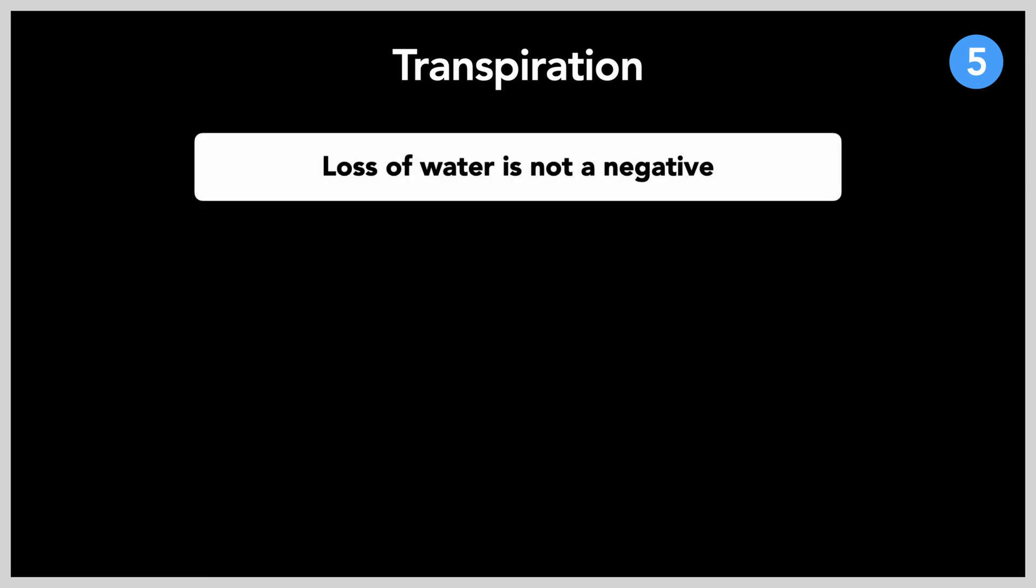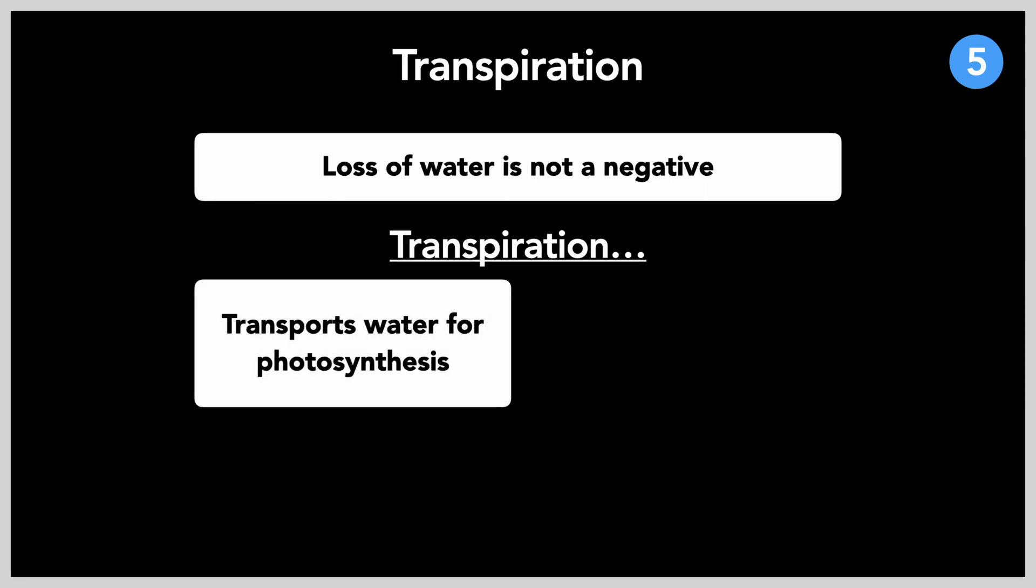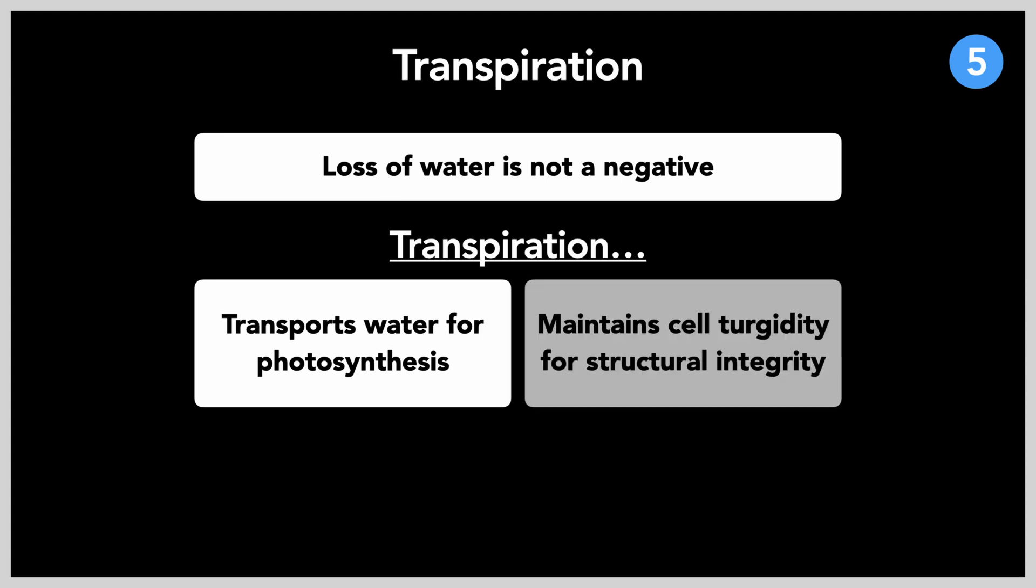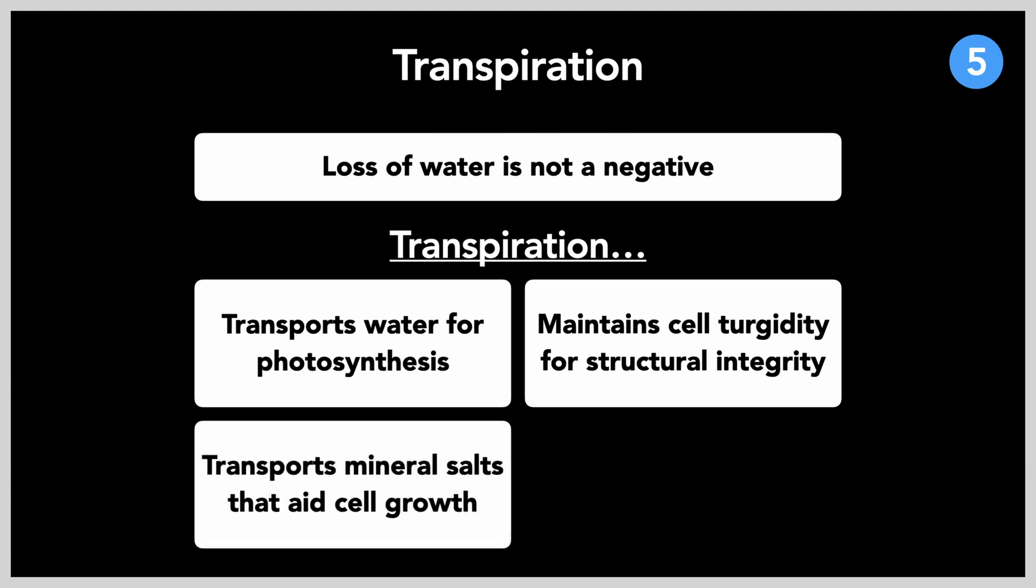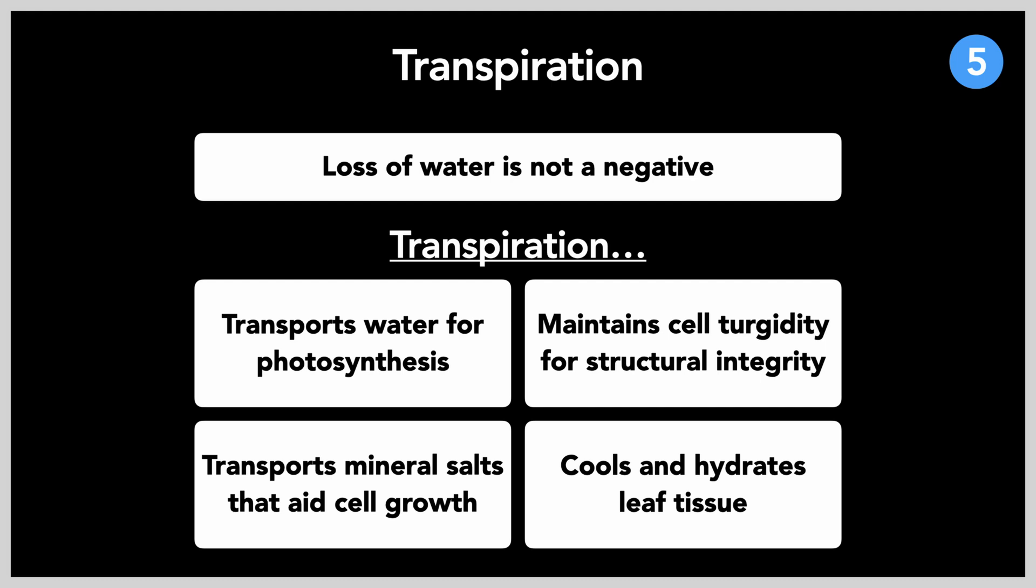Though the loss of water necessary for sustaining photosynthesis may seem like a negative, as over 90% of water is lost through transpiration, transpiration is a necessity for the fundamental transport of water for processes such as photosynthesis, maintaining plant cell turgidity as means of structural integrity. This process also transports mineral salts vital for plant growth, plus the benefit of cooling and hydrating leaf tissue to prevent dehydration. Only 5% of all water absorbed through the roots is used up in photosynthesis anyways, so it doesn't really matter.